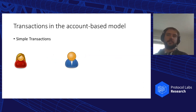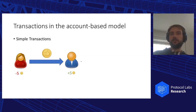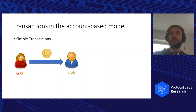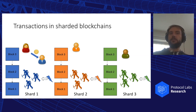Considering transactions in the account-based model: if Alice wants to pay Bob, we need to decrease Alice's balance, increase Bob's balance by the same amount, and make sure the whole operation is atomic — we don't want money to disappear or be created out of thin air. In a sharded blockchain, if Alice and Bob are in the same shard, this is easy — we just need one transaction, put it in the shard where they are located, and it's done.